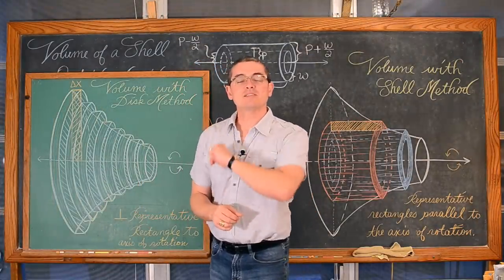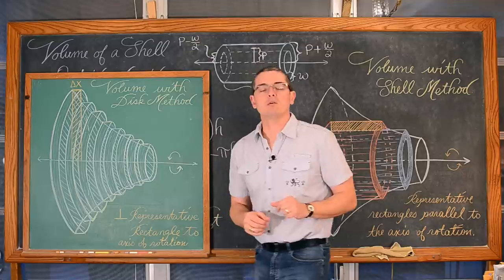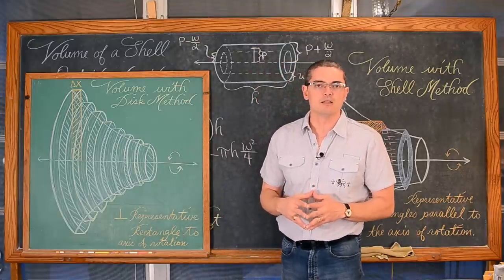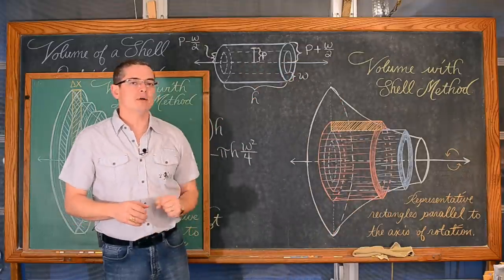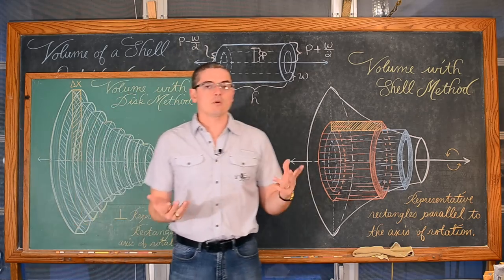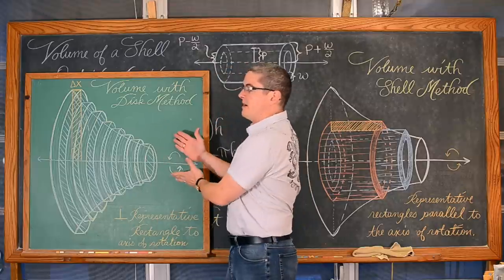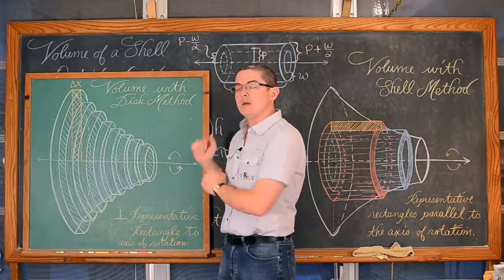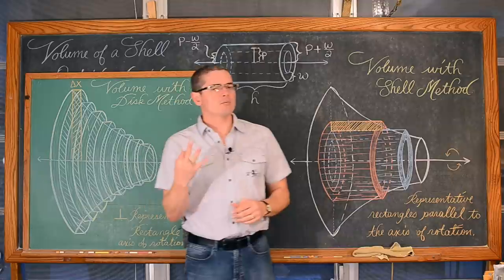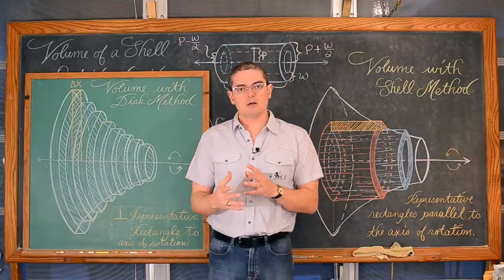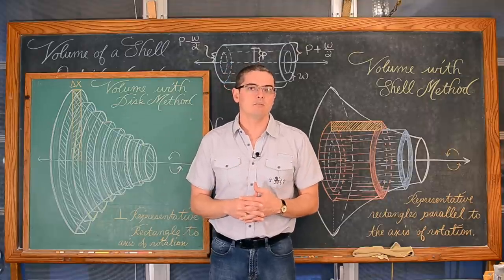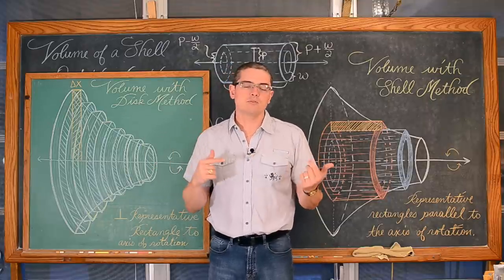Mr. Tarrou, in this lesson we are going to learn another technique for finding volumes of revolution, which is called the shell method. As you can tell by the beginning of the video, what we are going to be doing is comparing how to find these volumes that we have already learned using the disk method with the shell method. We are going to work through three examples each time showing you the comparison between these two methods.